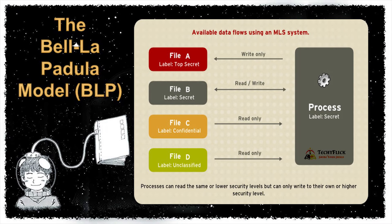For file B, the process can both read and write. For file A, the process has a restricted condition on what it can do. This is an example of an MLS system.